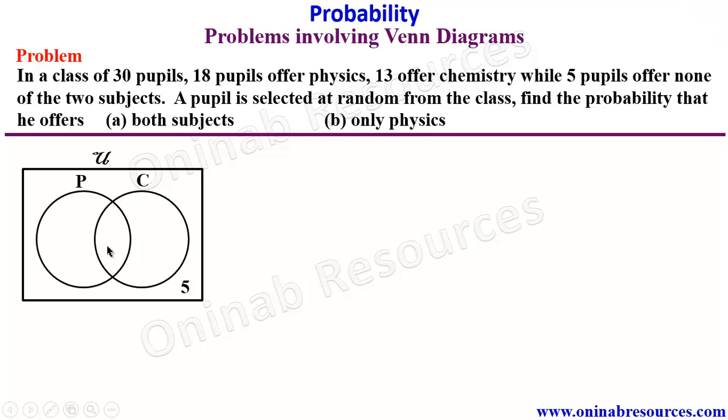And be informed that the intersection here are those offering both physics and chemistry. Well, since out of the 30 pupils, only 5 are offering none of the two subjects.